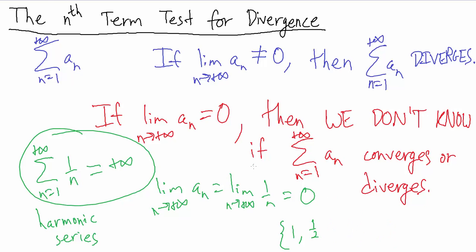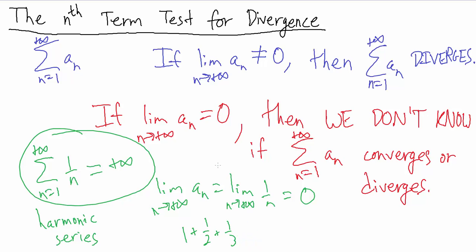However, the series — which is 1 plus 1/2 plus 1/3 plus 1/4 plus ... — is actually positive infinity. It diverges. Basically, the a sub n terms don't go to 0 quickly enough. That's why this series diverges: the a sub n do go to 0, but not quickly enough.